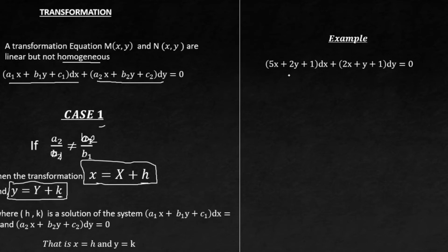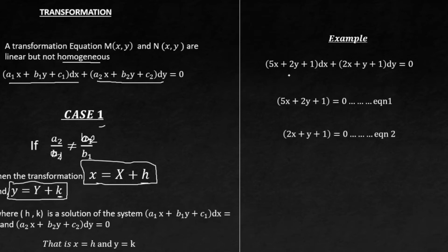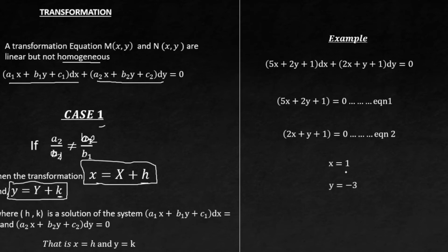The example is: (5s + 2y + 1)dx + (2s + y + 1)dy = 0. The first thing we do is extract the two linear equations and solve them simultaneously to get the values of s and y. If you don't know how to use the calculator to solve simultaneously, watch the video coming soon. The answers from the simultaneous equation are s = 1 and y = −3.